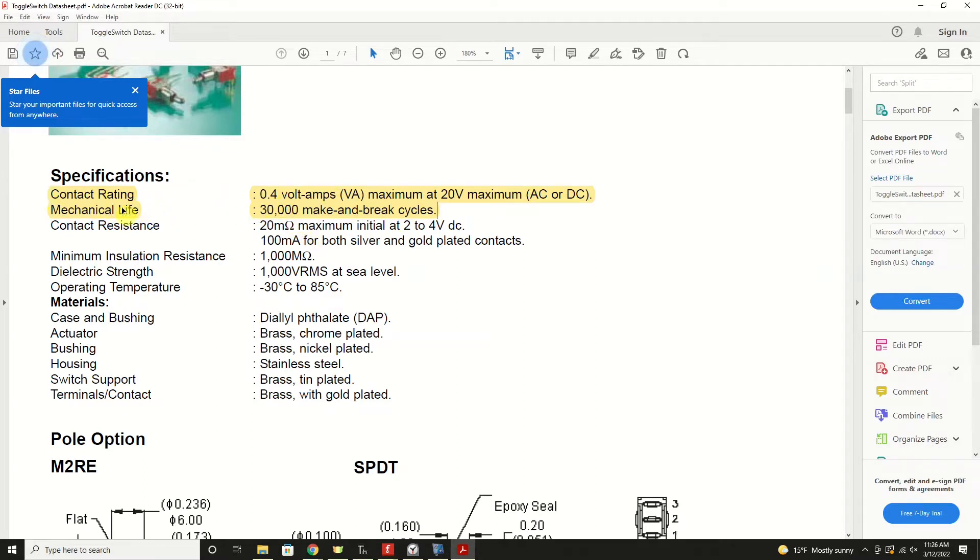Here's the important ones that I always look for is what the contact rating is. It's 0.4 volt amps, meaning at a maximum of 20 volts. So this particular switch is quite low. You wouldn't want to switch a lot of high powered electronics with it. The mechanical life is 30,000 make and break cycles. So that may be something you also have to consider if you're selecting this particular toggle switch.